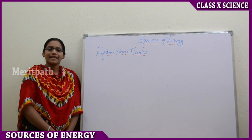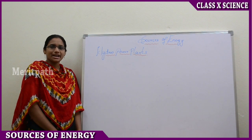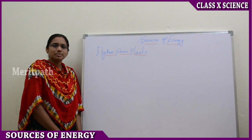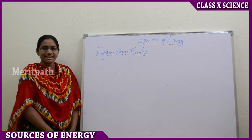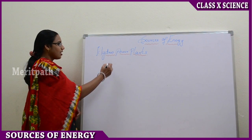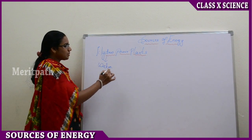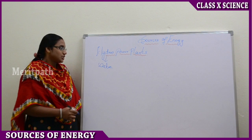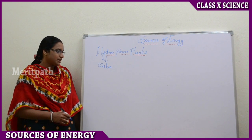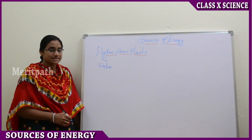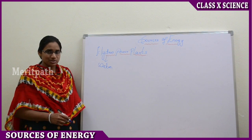Let us discuss the Hydro Power Plant. A Hydro Power Plant uses water as the source of energy to generate electricity as the output. In this power plant, we will be using water as a resource.